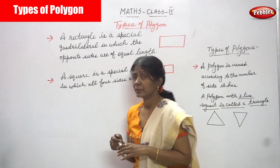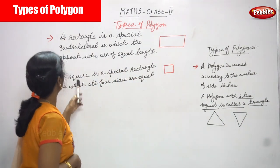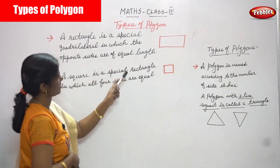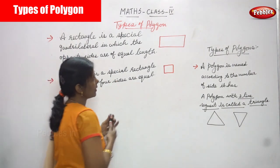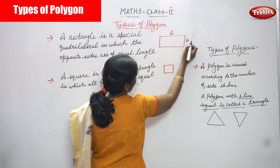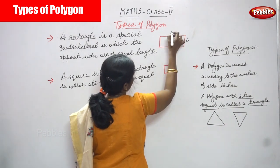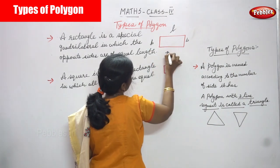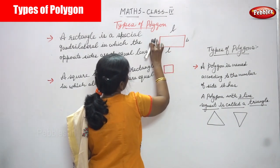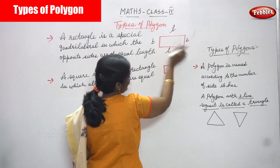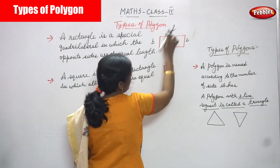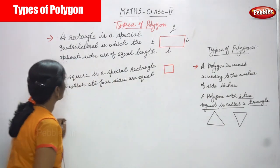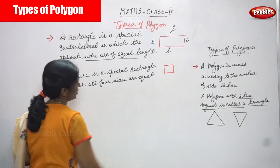Now we are going to see the type of polygons continued. A rectangle is a special quadrilateral in which the opposite sides are of equal length. So that means this is the length and this is the breadth. Two breadths and two lengths — so opposite sides are equal: two breadths are equal and two lengths are equal. That is what they mention — opposite sides are of equal length.